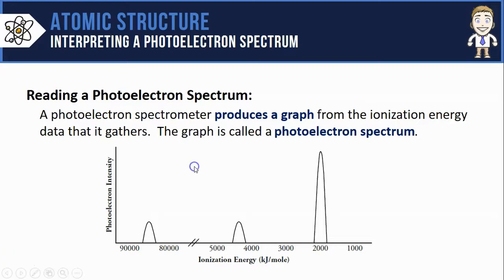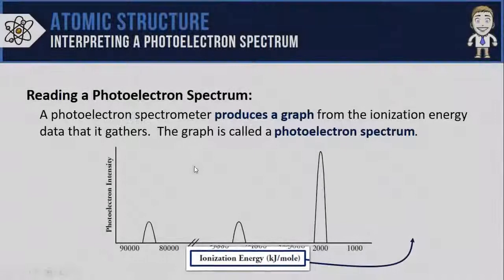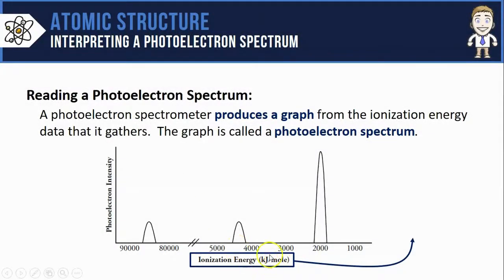On the horizontal axis is where you'll find the different ionization energies of the removed electrons, here plotted in kilojoules per mole. Sometimes you'll also see this labeled as binding energy, but it means essentially the same thing.